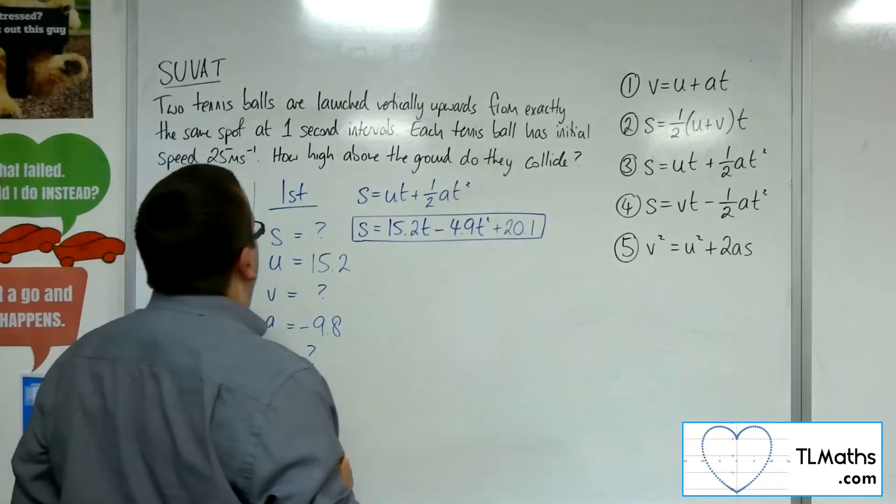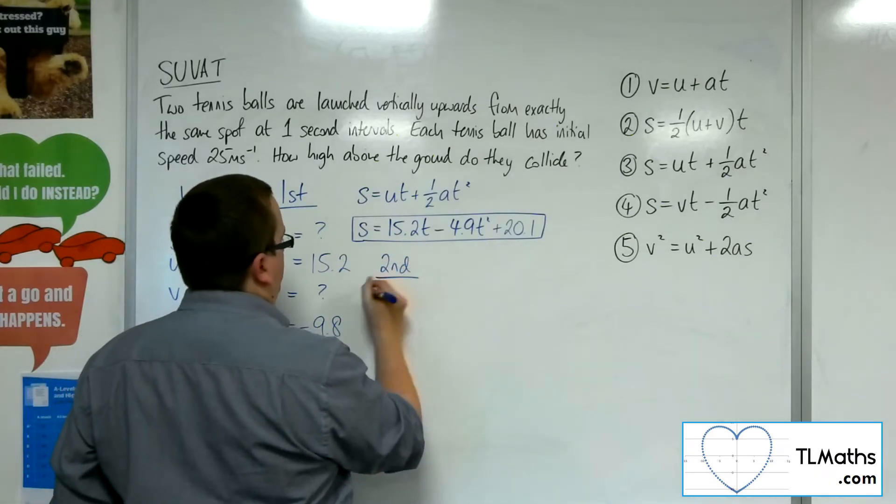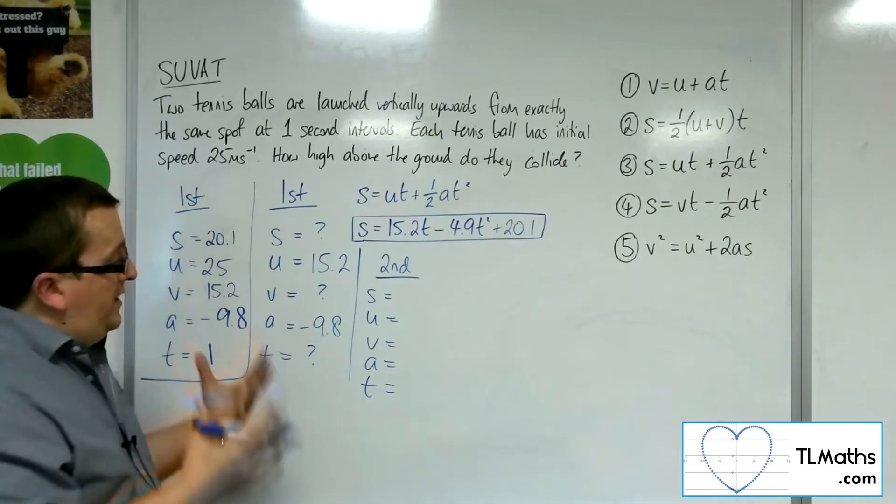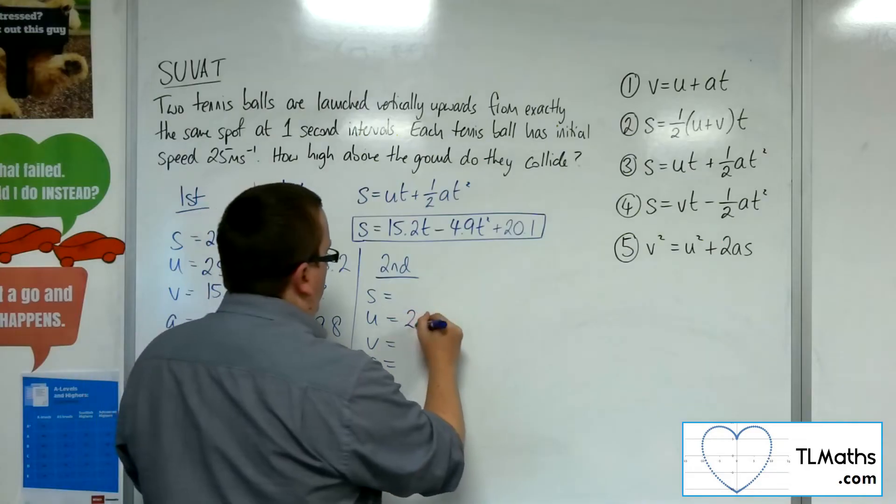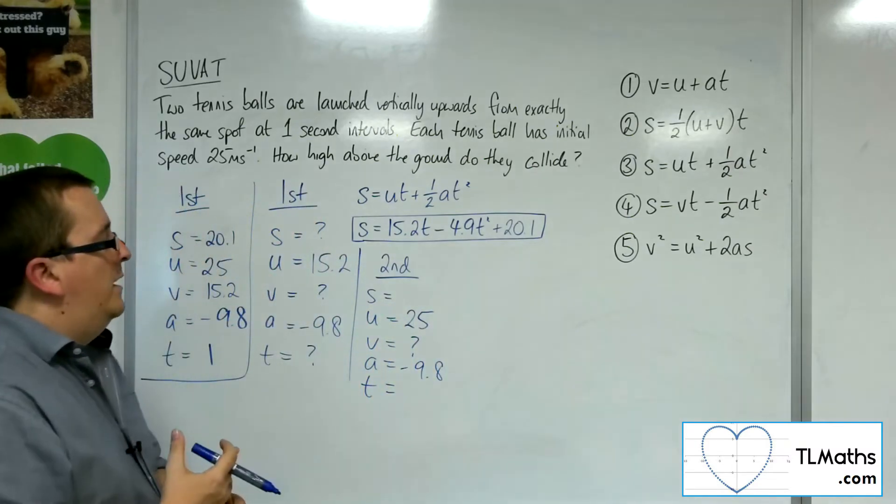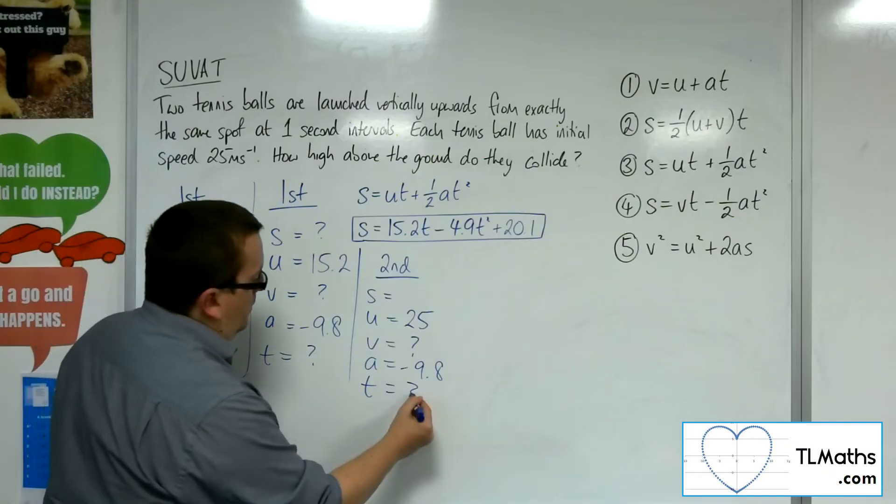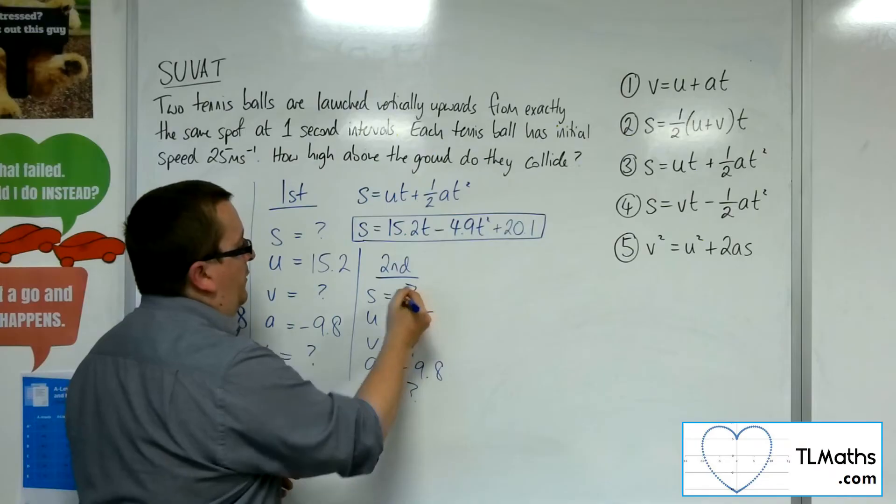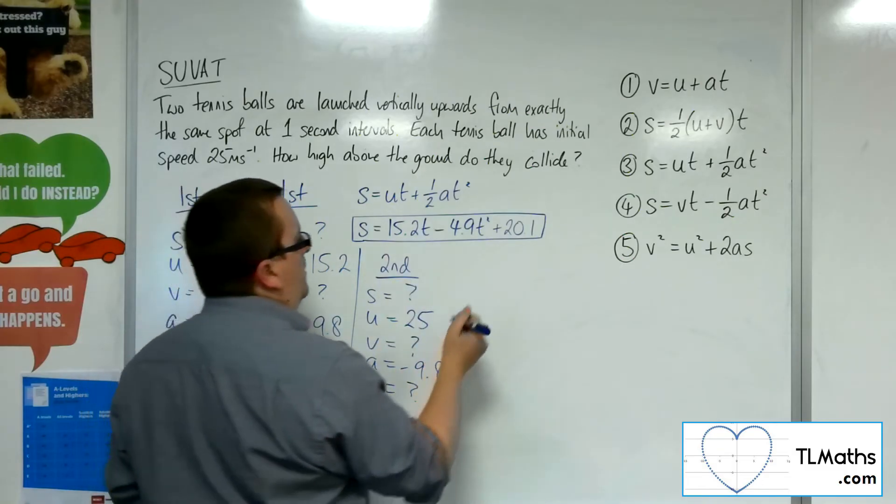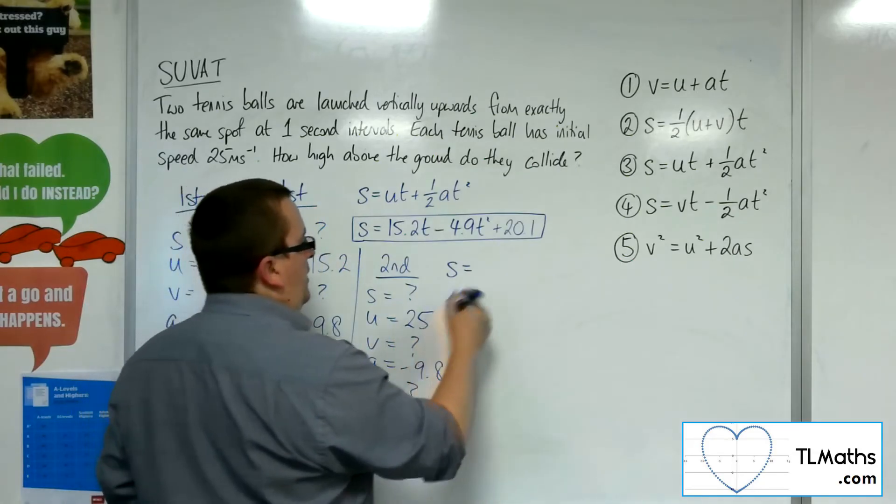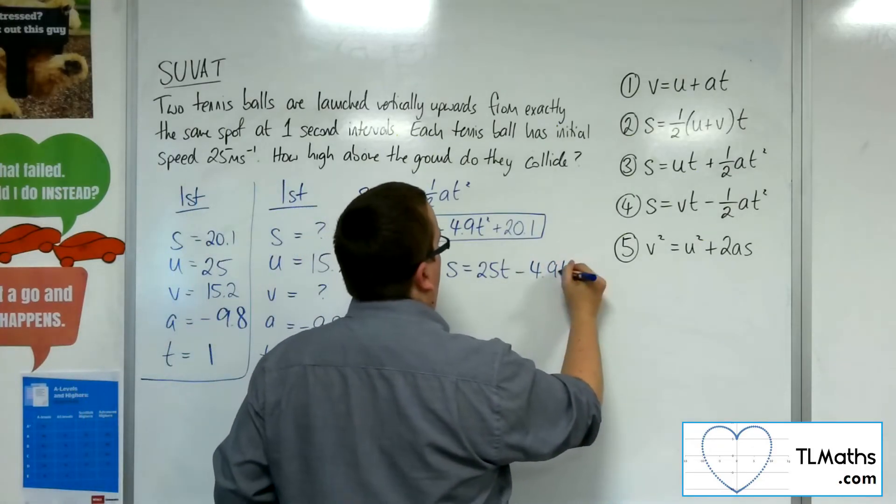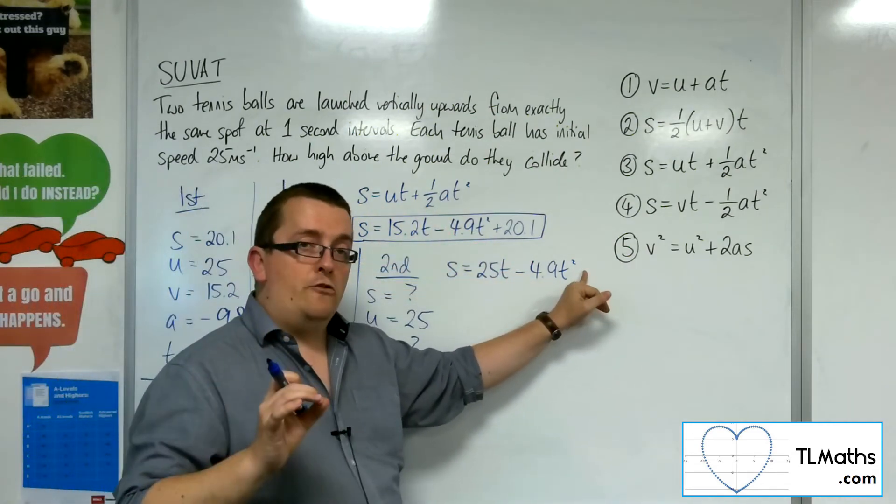Now, how about the second particle? So the second particle, S, U, V, A, T. Now, the second particle is just starting off. It has initial speed of 25 metres per second. I don't know what its final velocity is going to be. I know it's going to just be accelerating due to gravity, pulling it downwards. Don't know time. Don't know the displacement. Now, I can utilise that same equation, the S equals UT plus half AT squared, for the second ball. So S equals U times T, so 25T, plus half A T squared, so minus 4.9T squared. And there's nothing added onto that, because it's starting at the origin.